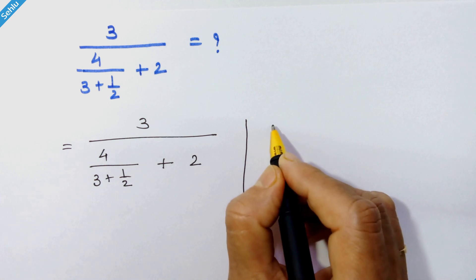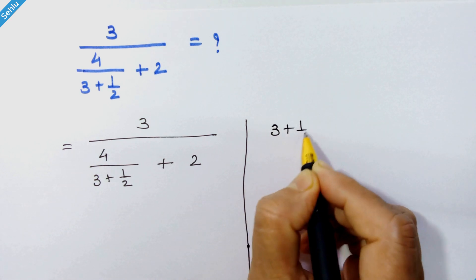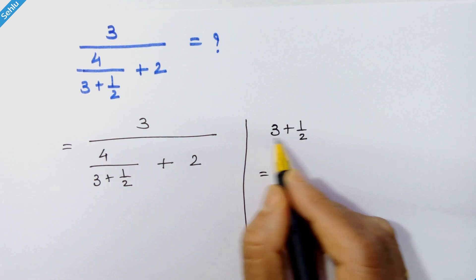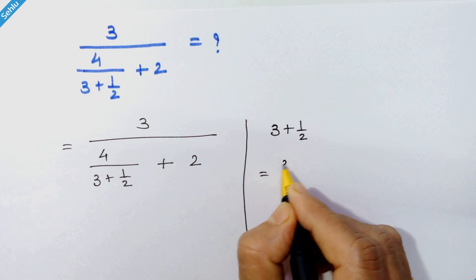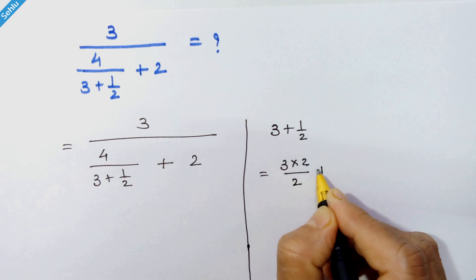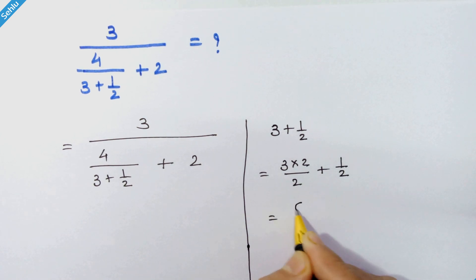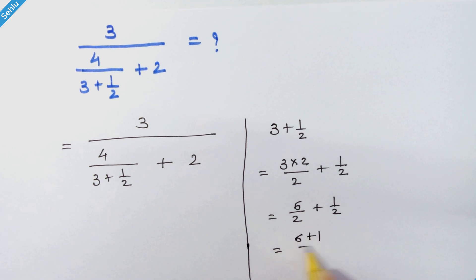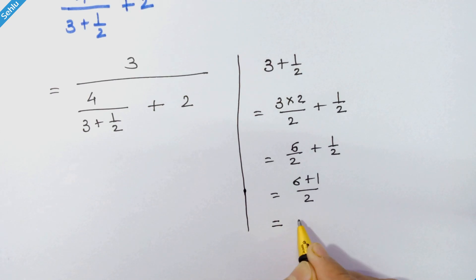So here we have 3 plus 1 upon 2. Let's take the LCM. So we have 3 times 2 upon 2 plus 1 upon 2 is equal to 6 upon 2 plus 1 upon 2, is equal to 7 upon 2.